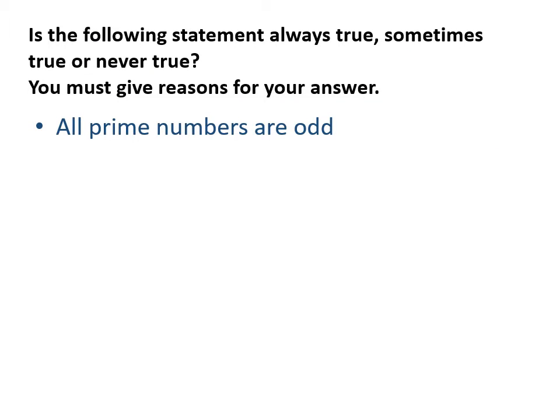So in this statement we're looking at all prime numbers are odd, always true, sometimes or never. Well in fact we know that two is prime and two is even. Therefore the statement is not true. It's not true that all prime numbers are odd. You could clarify here, I guess this one's a little poorly worded. I would probably clarify and say prime numbers are sometimes odd and sometimes even.